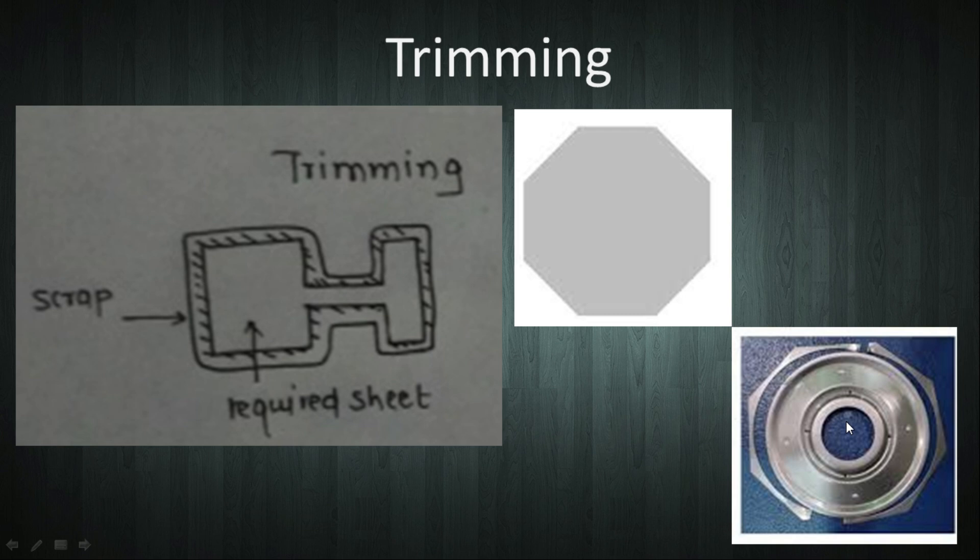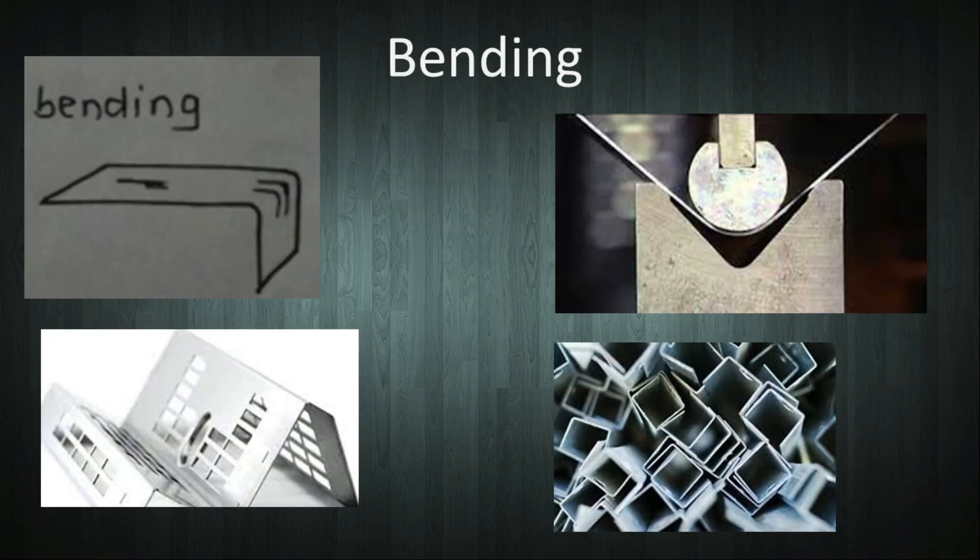The next operation is bending. In bending, one side of metal is under tensile stress while the other is under compressive. A force is applied beyond elastic limit but below ultimate strength. Bending can be done at right angle or in any required angle. Bending could be angle bending, roll bending, or seaming, etc. Common bending operations are shown in the figure.